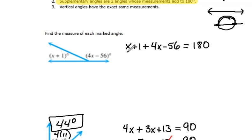So combining like terms, we have x plus 4x which would be 5x. We can also combine our plain numbers. We have 1 and negative 56 which would be negative 55 equals 180.